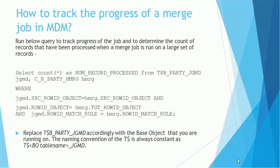Replace T$_B_PARTY_JGMD according to the base object you are running on. The naming convention of T$ is always constant as T$_[base object name]_JGMD. This temporary table is created at the start of the merge process and dropped at the end of the merge process. It is helpful for checking how many records are getting successfully merged in each batch of the merge process.